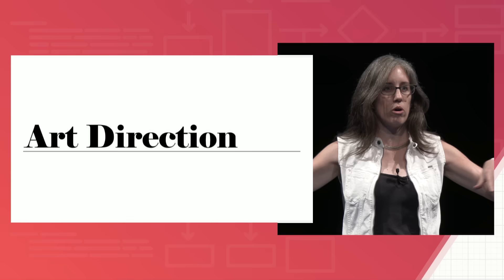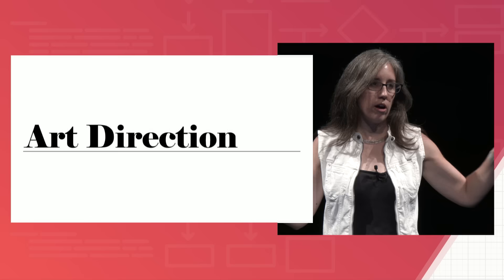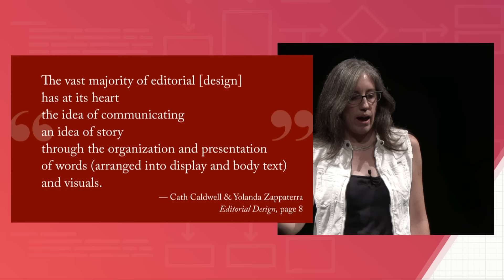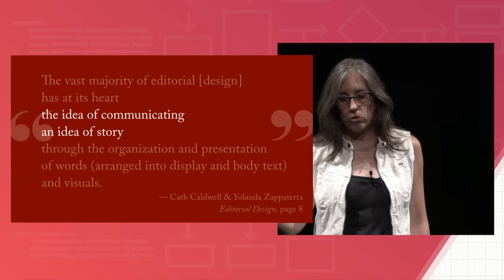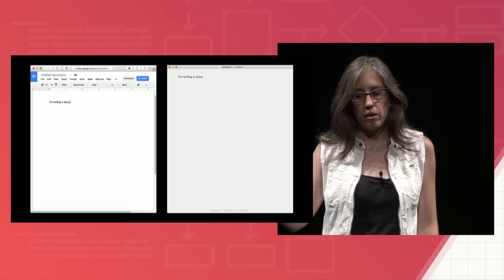That process of thinking through what associations do I want to make - you're not choosing a typeface that never existed before. You're not going to lay something out in a dimension that has never been accessible. Everything we're doing is tapping into things that have been seen before, creating associations with other work, other people, other things. Editorial design is another great way to think about this. There's a book called Editorial Design which says the vast majority of editorial has at its heart the idea of communicating a story through the organization and presentation of words and visuals. You have to first identify what's the idea of the story, what's the idea of this site, this app, and then find ways to communicate that.